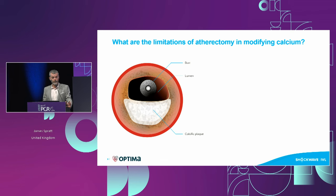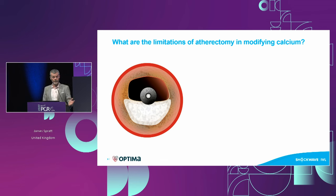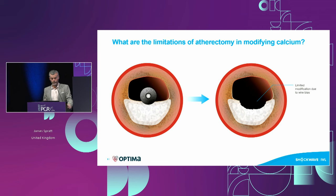What about atherectomy — rotational or orbital? Atherectomy is critically a contact-dependent technology: it has to touch the calcium to modify it. There are two main limitations: it's very difficult to control where the wire goes in a calcific artery, and in terms of ablation, you get much less volume reduction than you might think — data shows we drill away about 10% of the calcium. So it probably has utility in volume reduction, but less profound than we might expect.